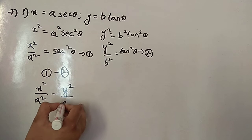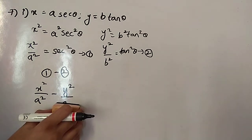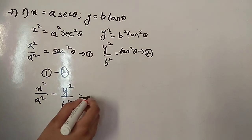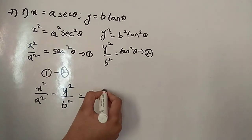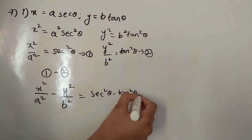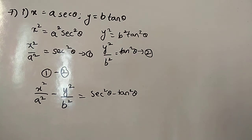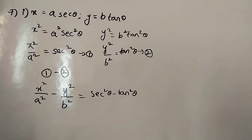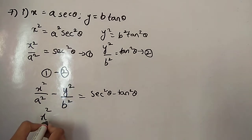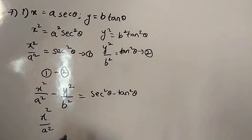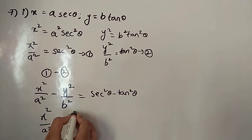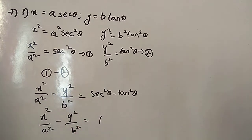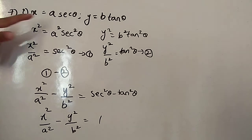LHS — you have to write both on the same side. You are not supposed to change the side. These two are on the LHS. So like that you subtract: x²/a² minus y²/b². And the RHS becomes sec²θ minus tan²θ, which equals 1. So hence we removed theta.